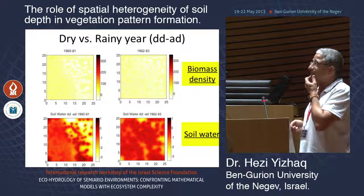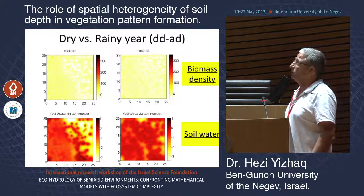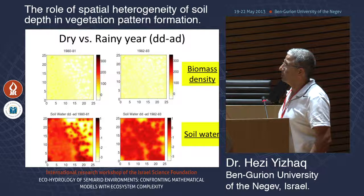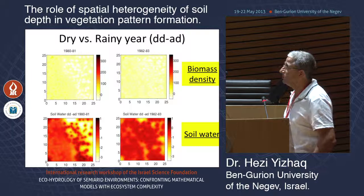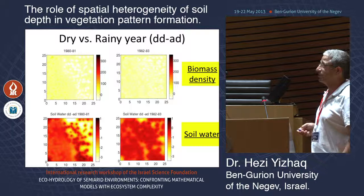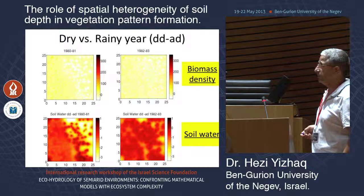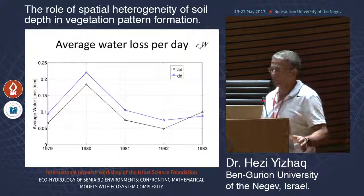The main result is that in a rainy year we do not see much difference between the two scenarios. But in the dry year — looking at DD minus AD for biomass density — there is less vegetation in the DD scenario and also less soil water, compared to the rainy year.